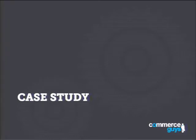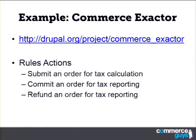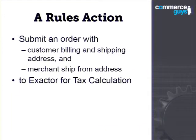Now we're going to move on to a case study. We can look at how we actually use default rules. I'm going to use an example from a module called Exacta — a system for calculating sales tax in the US. It has three actions: submitting an order for tax calculation, committing the order, and refunding it. The action takes the customer billing and shipping address, the from address, and the order itself, then sends it off for calculation.